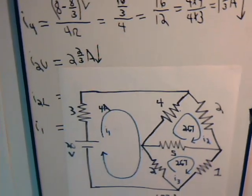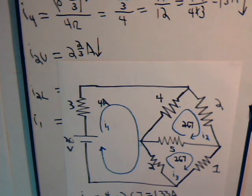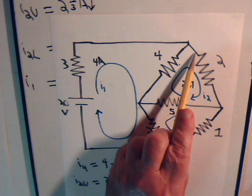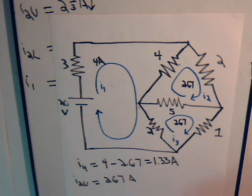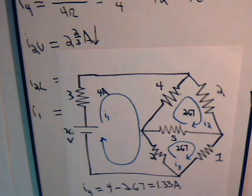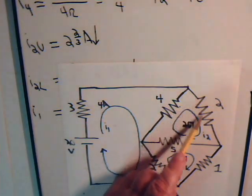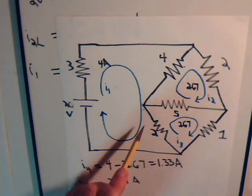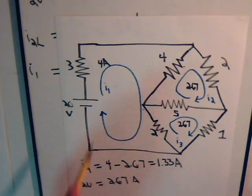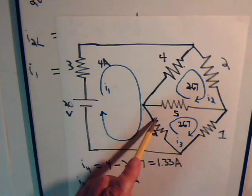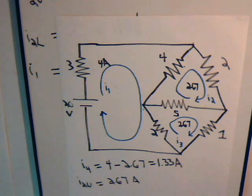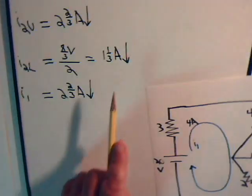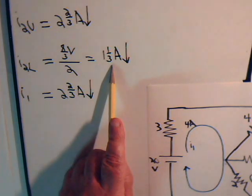For the upper 2 ohm resistor, the current is simply 2.67 amps — the value of the mesh current — and nodal analysis gave 2.67 amps going downward as well. For the lower 2 ohm resistor, we have 4 amps going one way and 2.67 amps going the other, leaving a net current of 1.33 amps going down. That is also what we determined from nodal analysis.